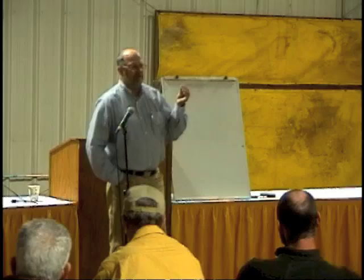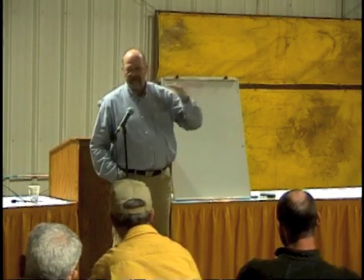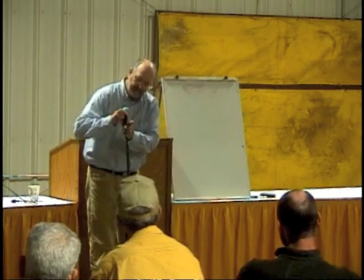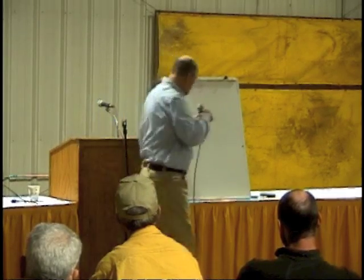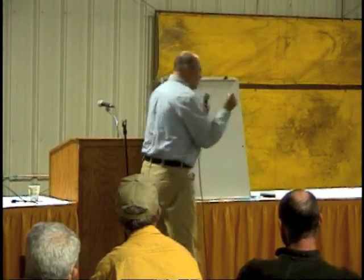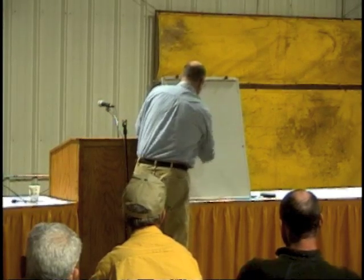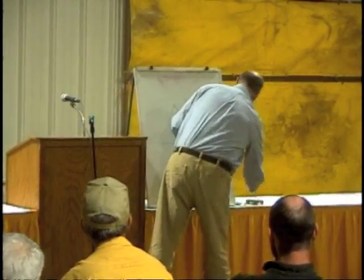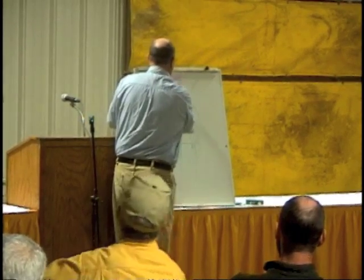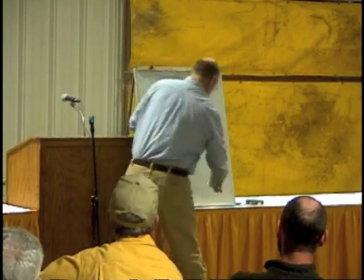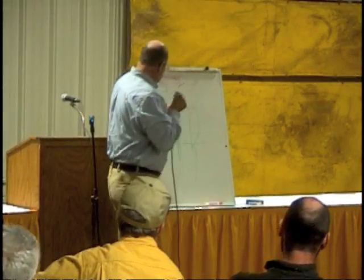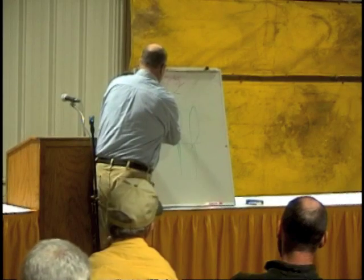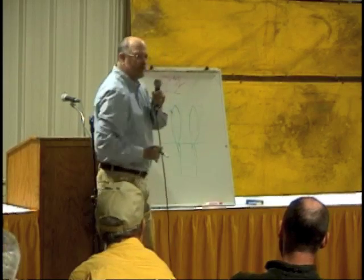I'm going to start talking about grass and how it affects a cow, but you first need to know how that grass grows, and then I'll talk about the effects. I'm going to draw my grass plants here. The grass plant takes in carbon dioxide through pores called stomata.